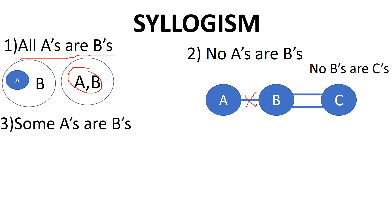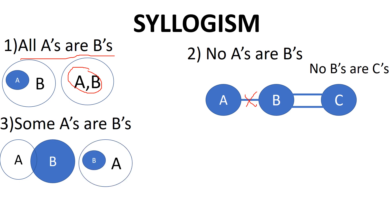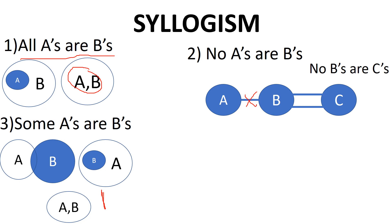Next, some A's are B's. For some A's are B's, this type of diagram will be shown. About A and B's — at least one A is B. This type of diagram represents the partial overlap. Look at all A's are B — this type is also shown here.